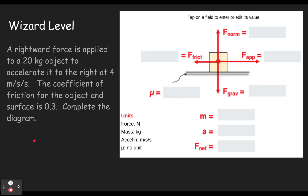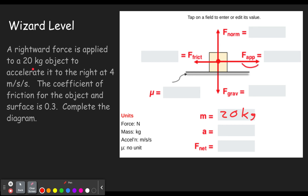Let's move on to the wizard level using that equation. A rightward force is applied to a 20 kilogram object — mass is 20 kilograms. It accelerates to the right at 4 meters per second squared, so our rightward force is going to be bigger. Before reading the last sentence, let's calculate the net force: F equals MA, so 20 times 4 gives us a net force of 80 newtons.